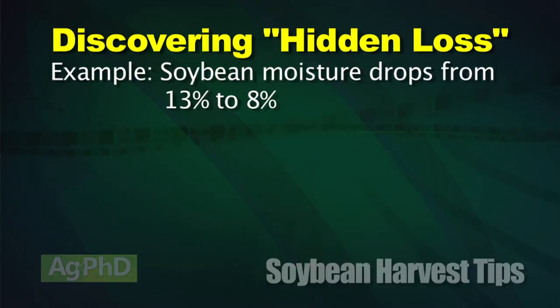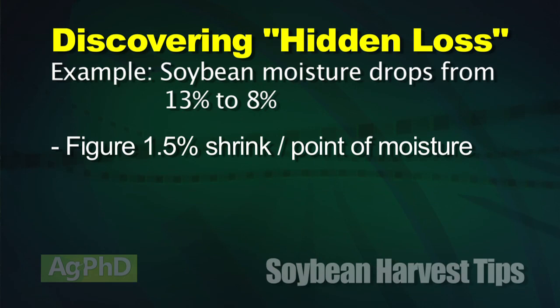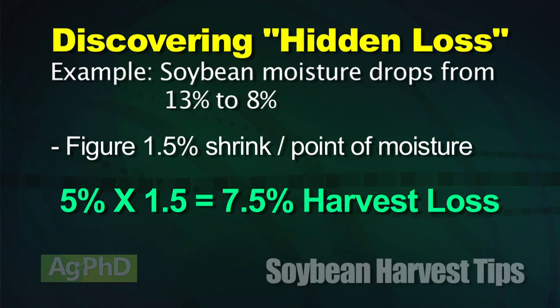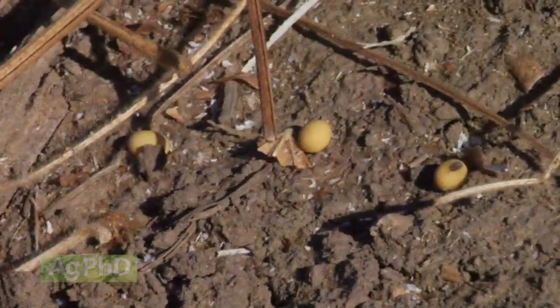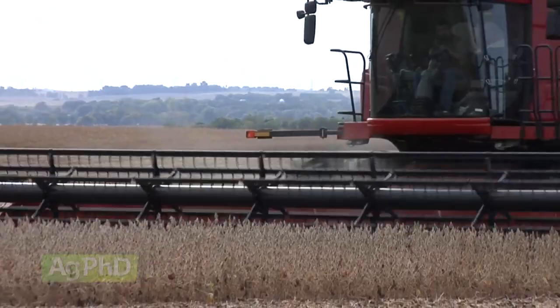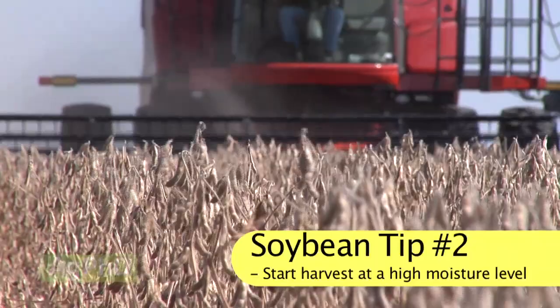A lot of times we've got snow flying when we finish, so we want to be done a little bit earlier and we've got to start a little bit earlier. But here's the flip side: you don't want high moisture because you'll take a dock, but at 8% moisture you've got to figure about one and a half percent shrink per point of moisture. So if you're five percent lower than 13% — the point at which you won't take any more dock — that's five percentage points times 1.5%, which is seven and a half percent yield loss. That's many dollars per acre multiplied over your whole field — a tremendous amount of loss. And if you let the beans get a little drier, more are going to pop off right at the combine. You always want to start your harvest at a higher moisture level and work your way down.